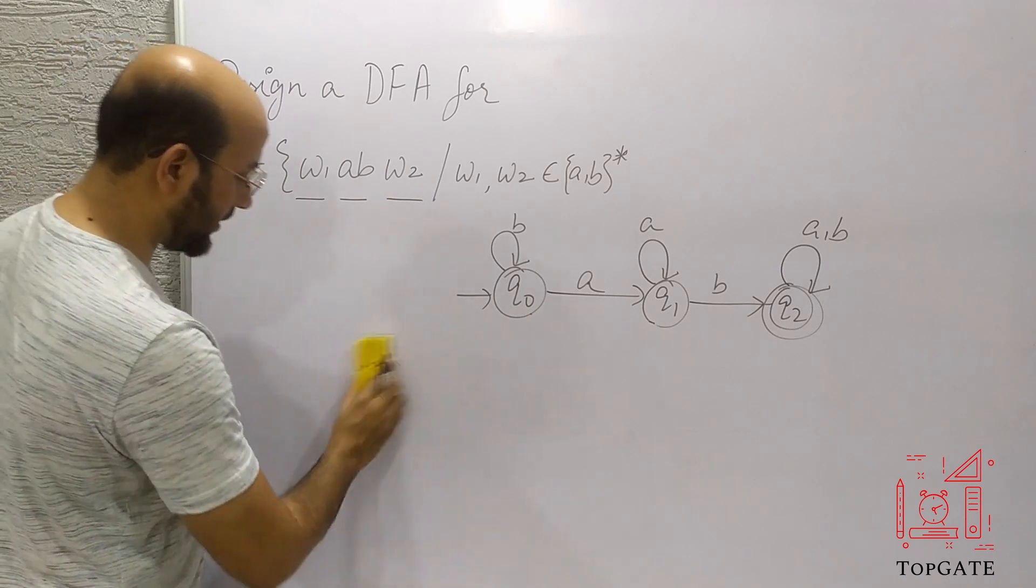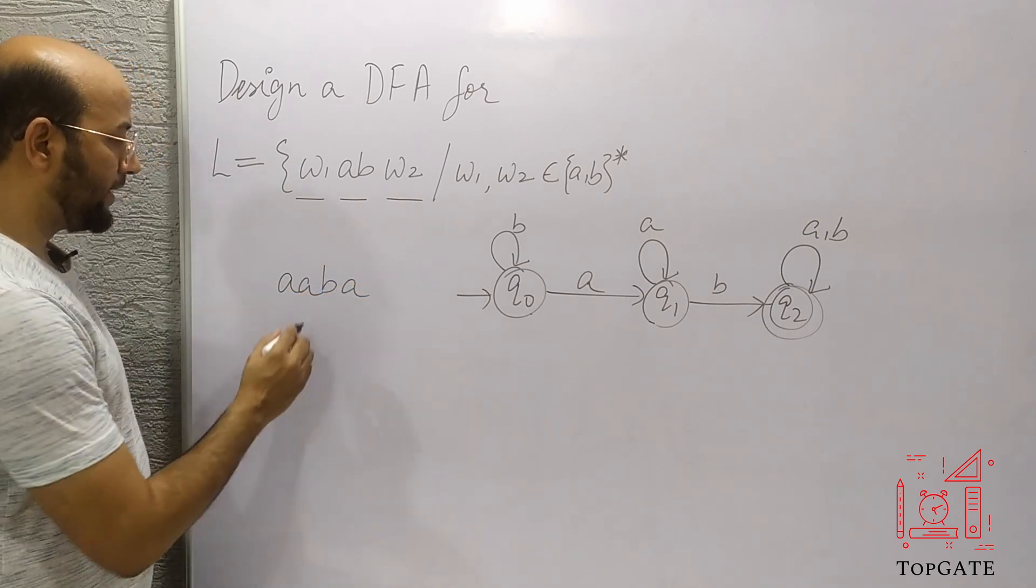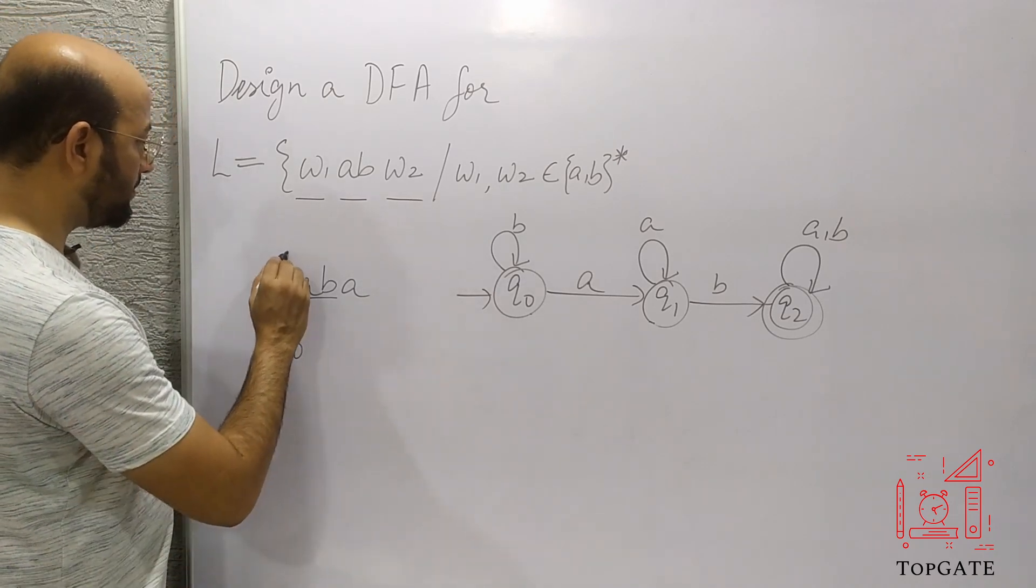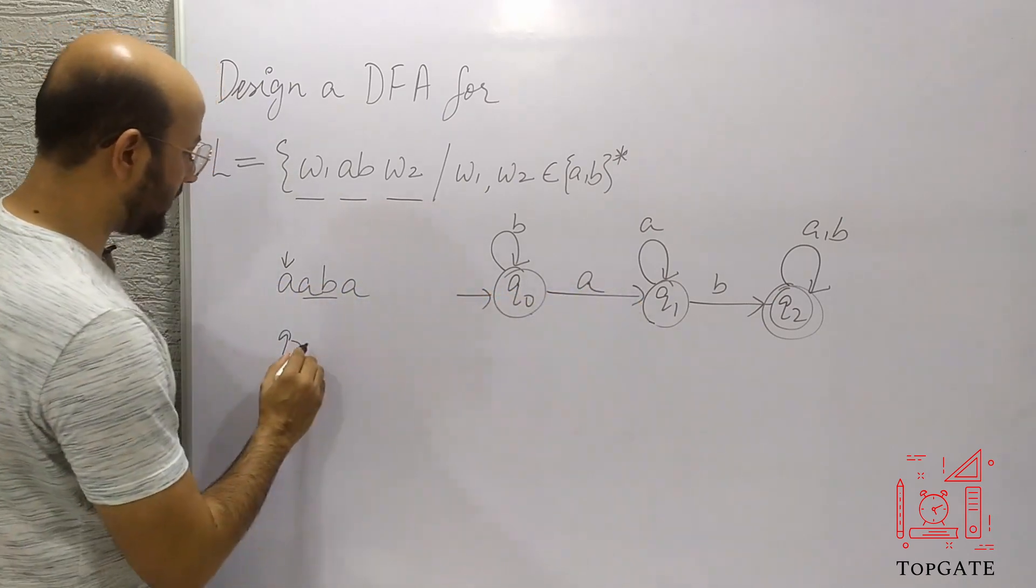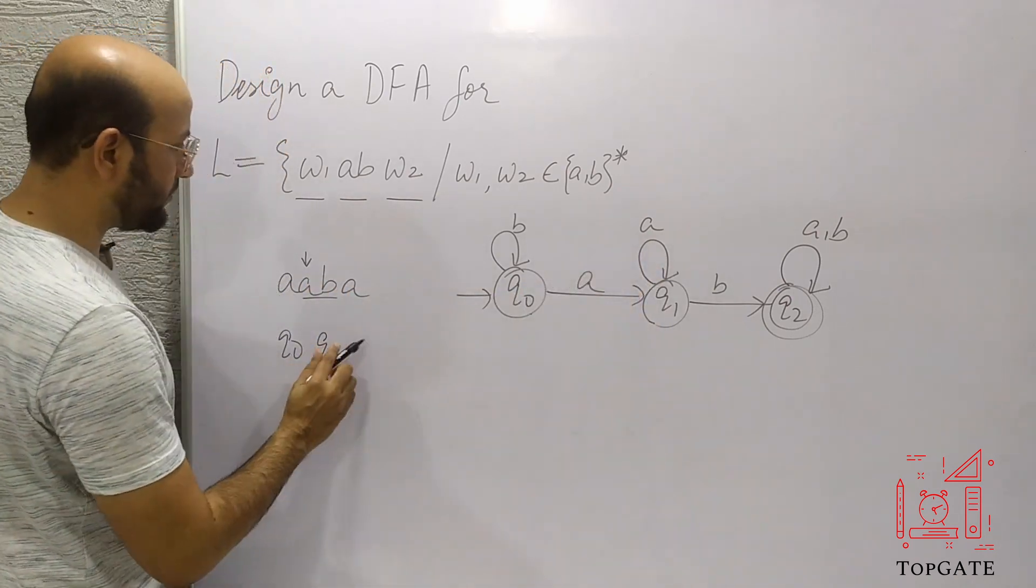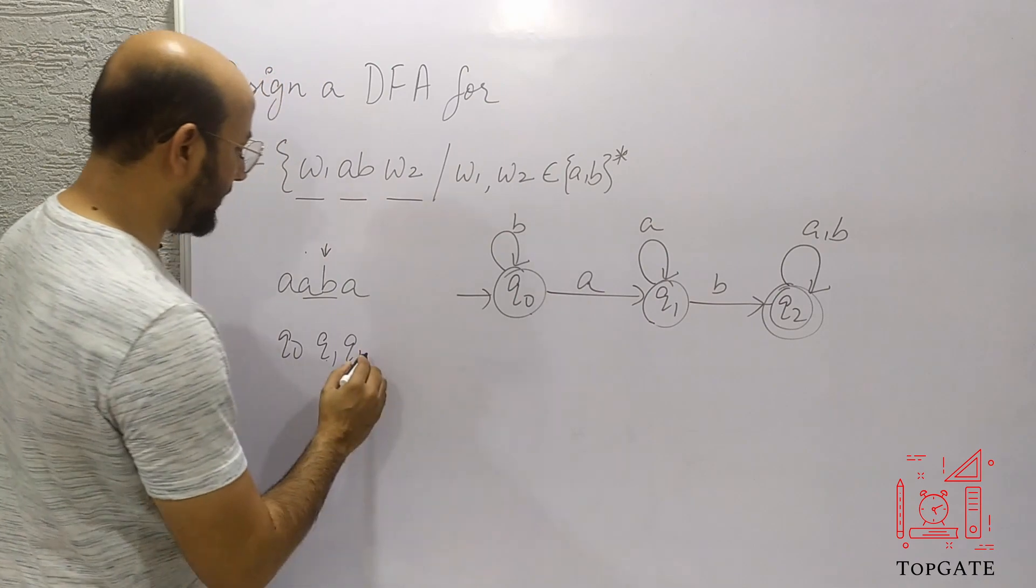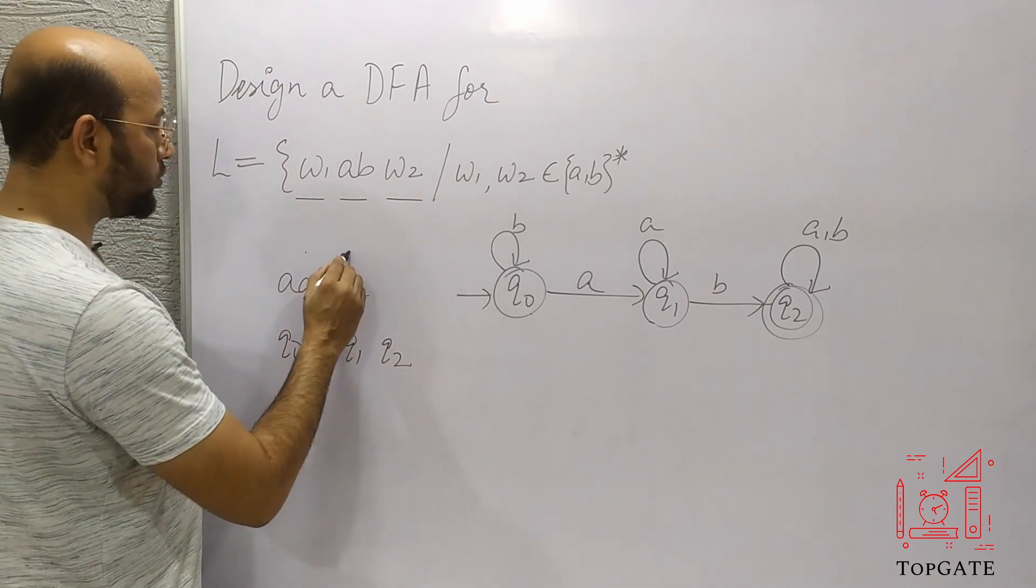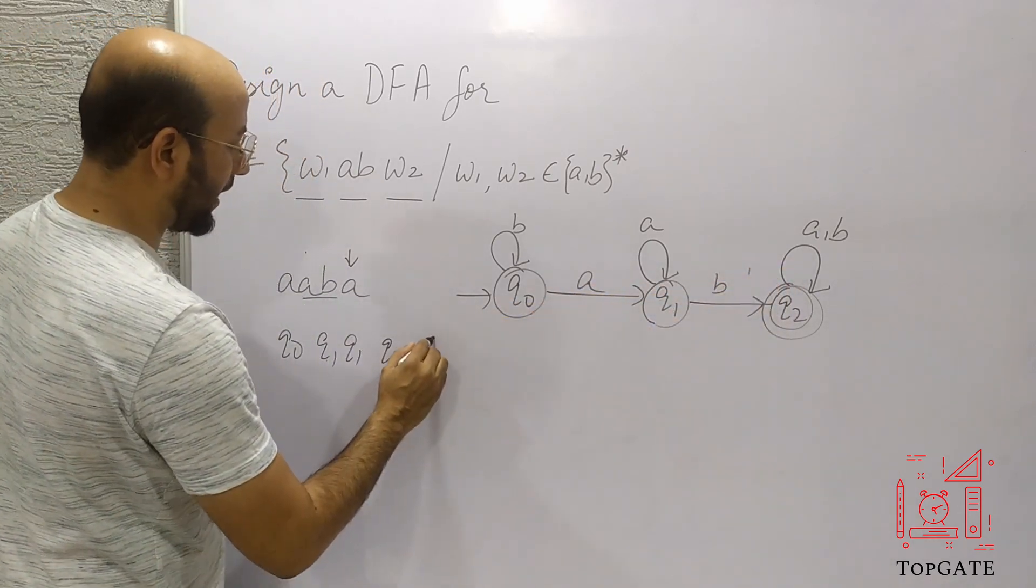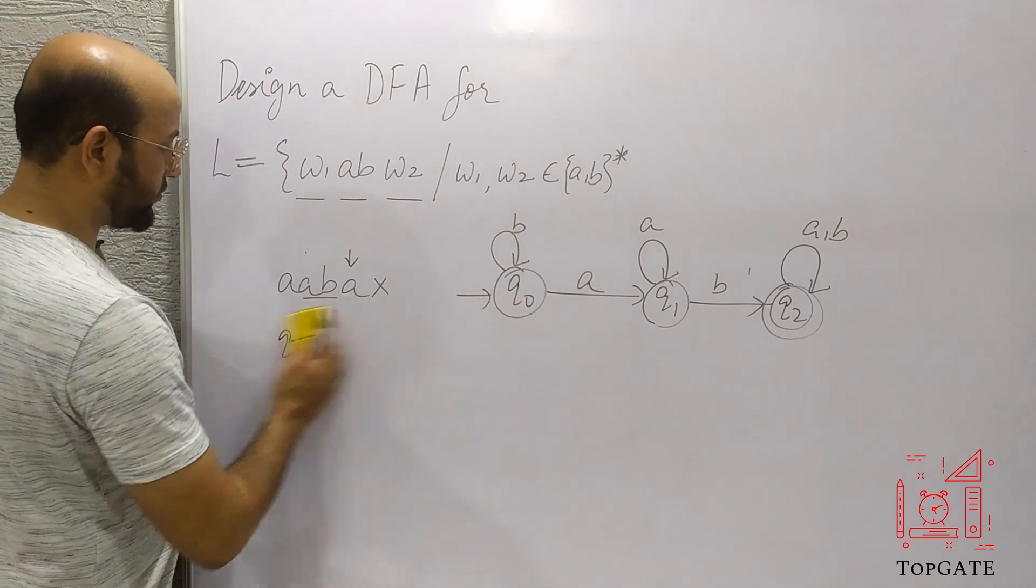So let's check it out whether it is working correctly or not. The correct string that I can take is, suppose AABA. In this one, I have AB in between, so technically it should be accepted. So initial state is Q0, pointer is at A. Q0, A applied, I went to state Q1, pointer moves on to A. At Q1, A applied, I went to state Q1 and the pointer moves on to B. At Q1, B applied, I went to state Q2, pointer moves on to A. Now at Q2, A applied, I went to Q2 only and Q2 is my final state. Therefore, this string is getting accepted by this DFA. So this is a correct string that is getting accepted.